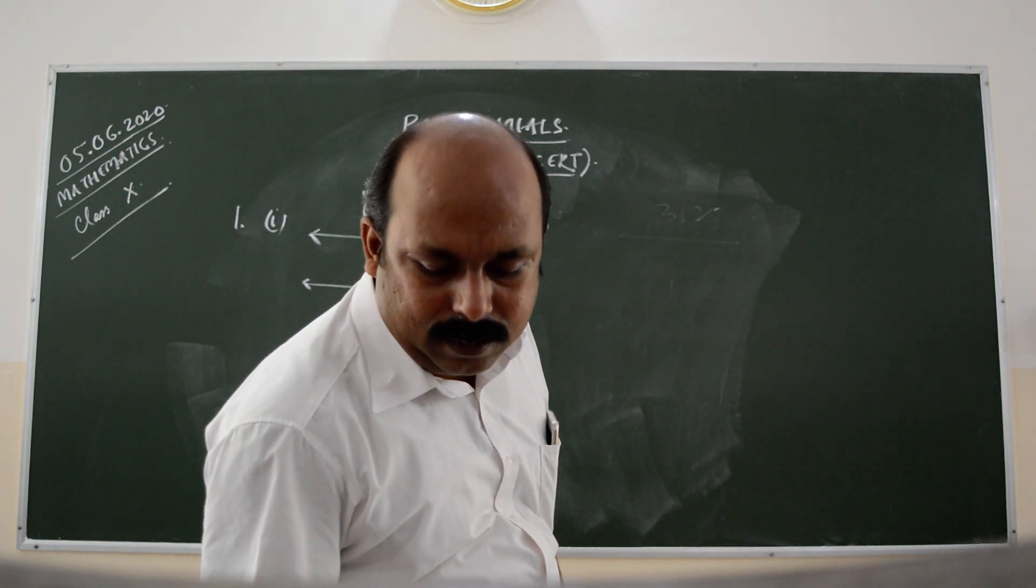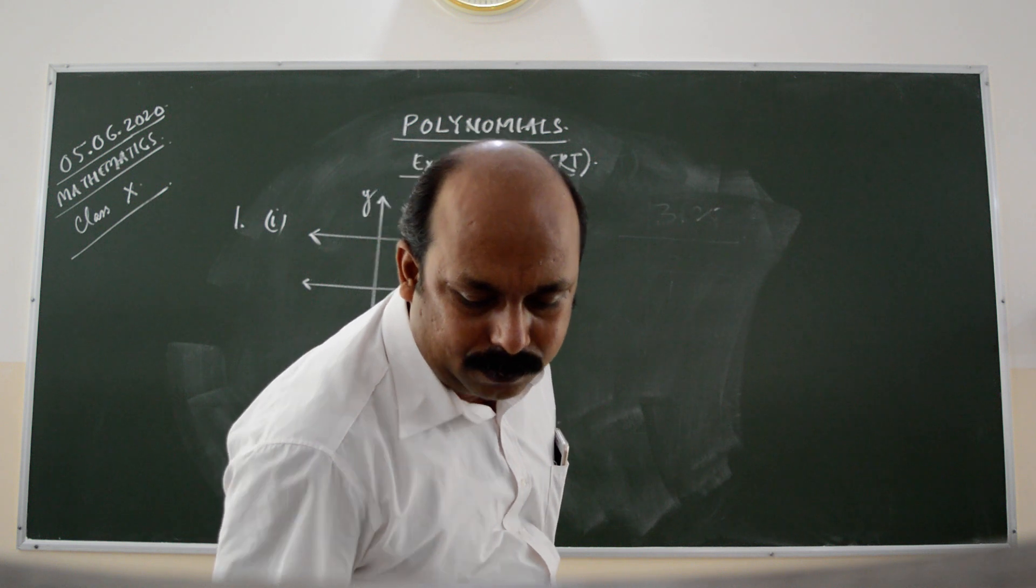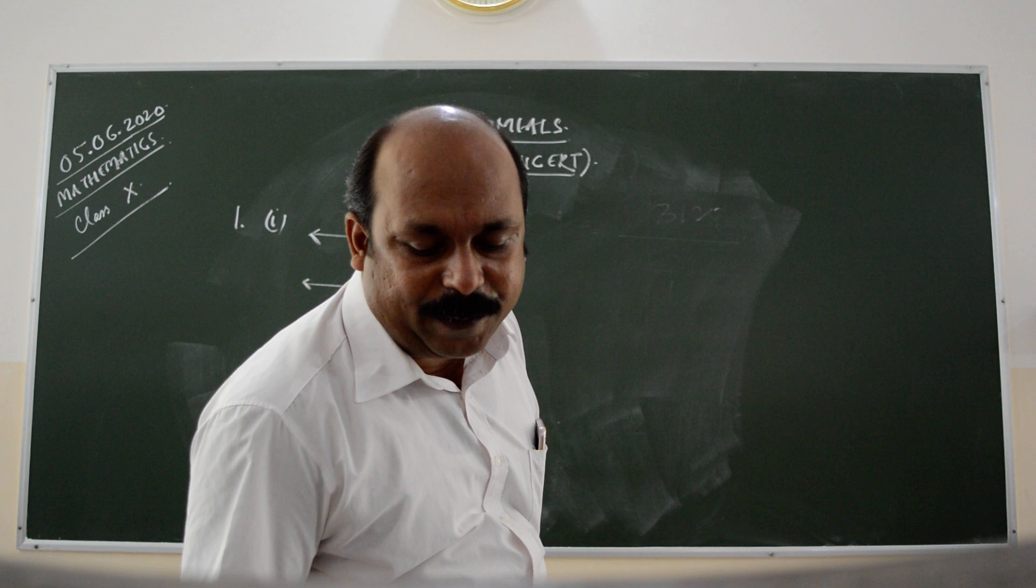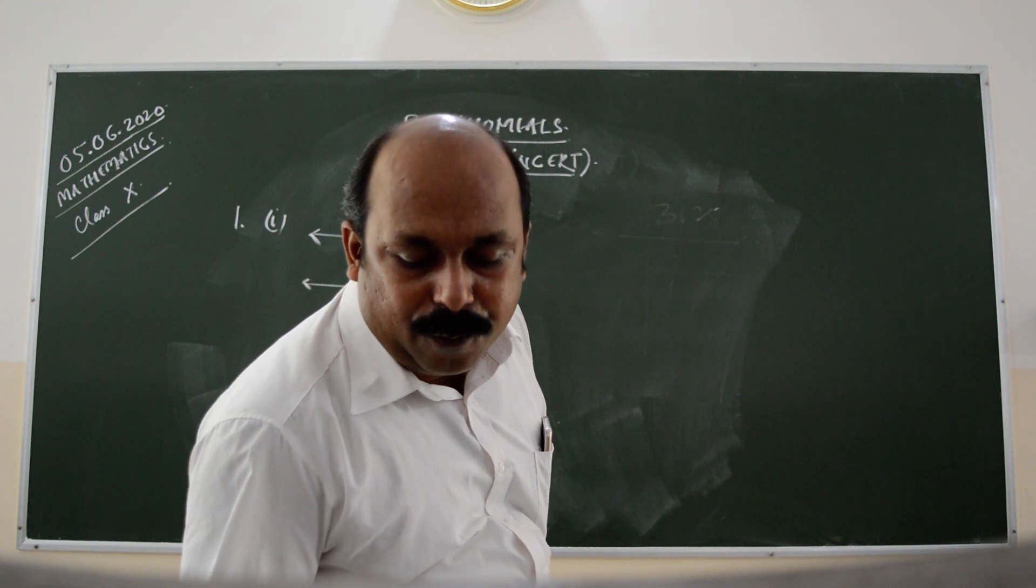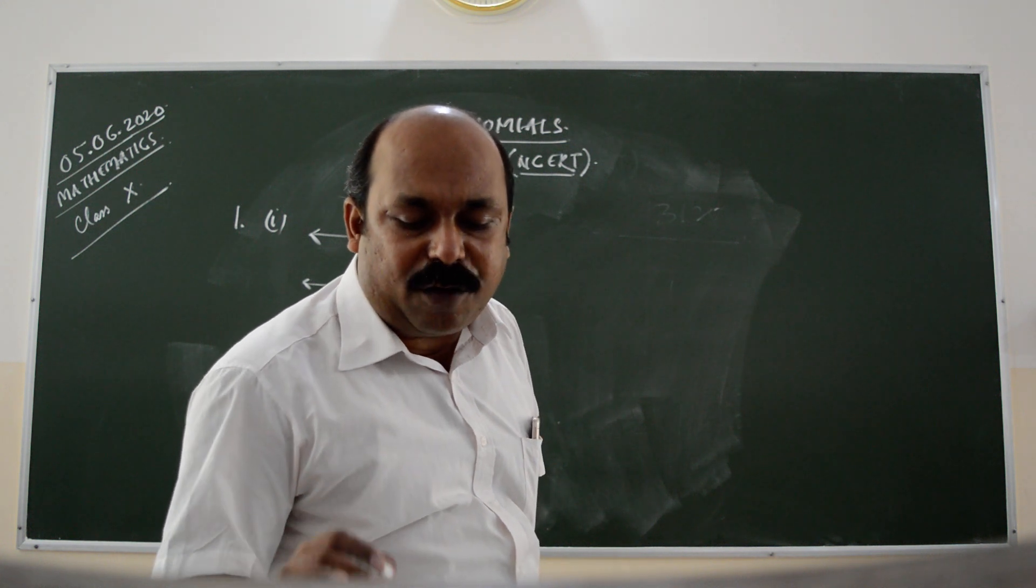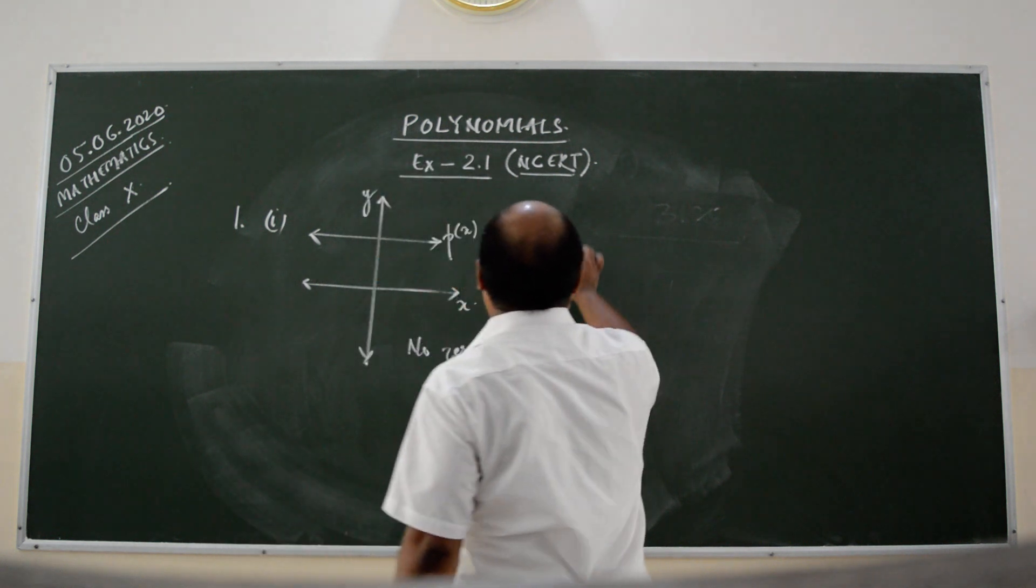Let us move to the fifth question of this exercise. The question says, the graph of y is equal to p of x are given below. For some polynomial p of x, you just have to find out the number of zeros of p of x in each case. We are taking the fifth question now.